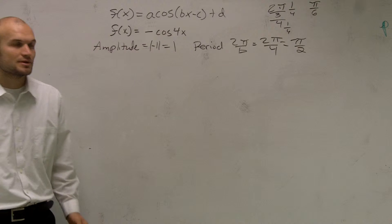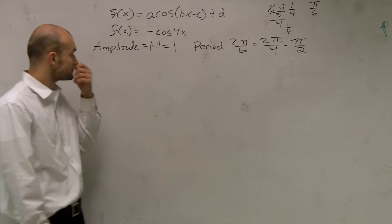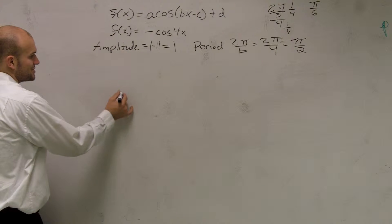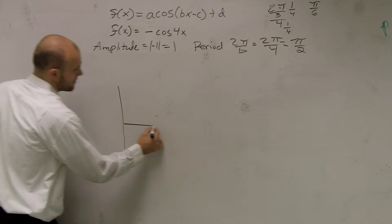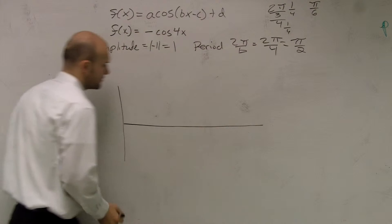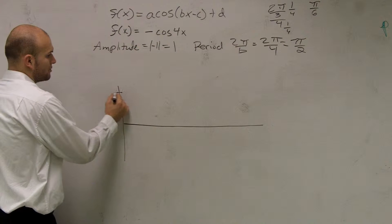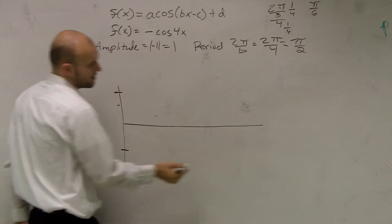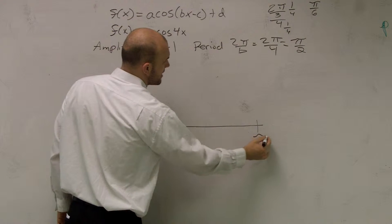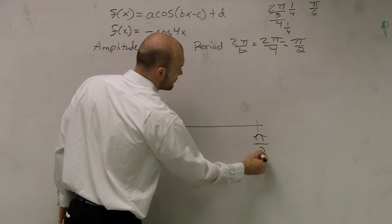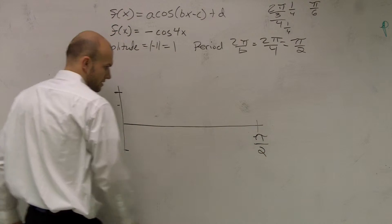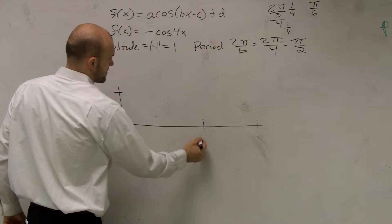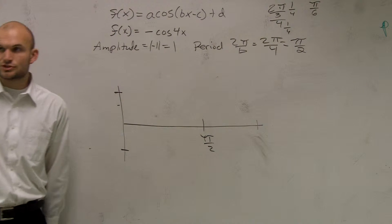Now this one's going to be kind of similar to what we were talking about. Once you have your amplitude and your period, you can get the beginning stages of your graph. We know it's going to go up to 1 and down to 1. This is a cosine graph, so we know it's going to complete one cycle. Let me make this closer so I can do two cycles. We know that it's going to complete one cycle at π over 2.